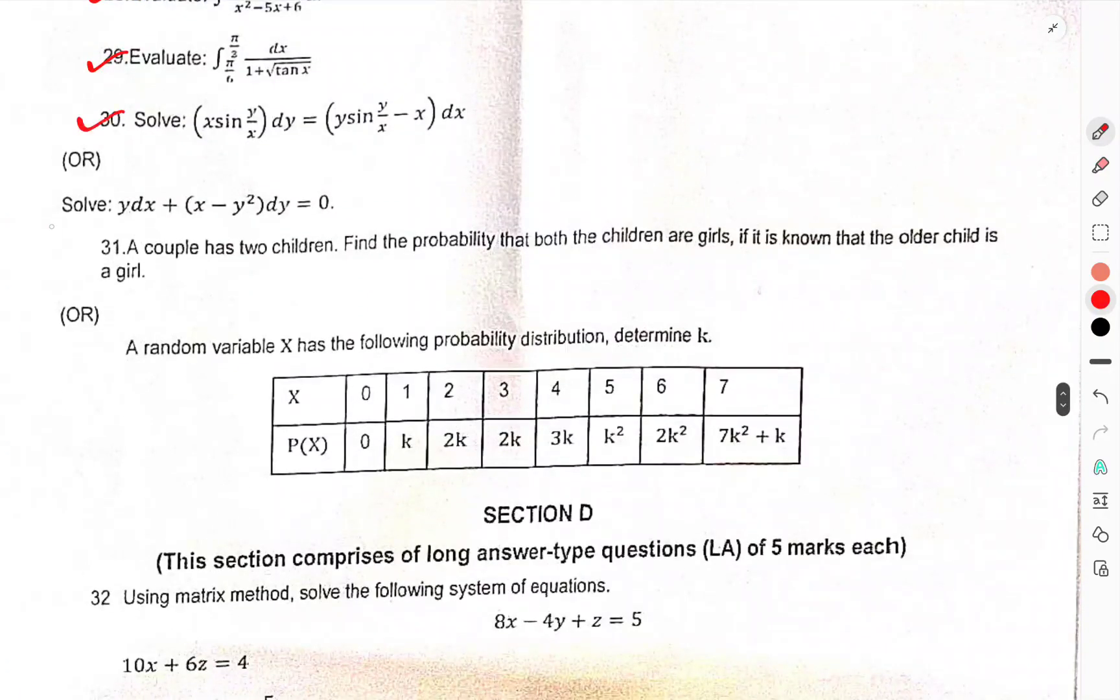Question number 30, solve this. Solve Y DX X minus Y square DY. Differential equation is this. Question number 31, a couple has two children. Find the probability of both children are girls if they know that one child is a girl. Or random variable X has the following probability distribution. Determine K.